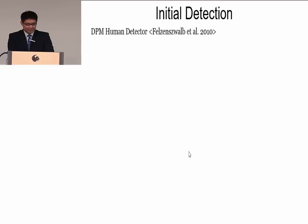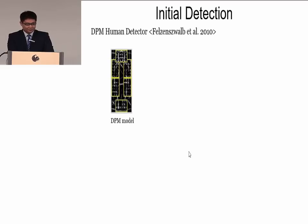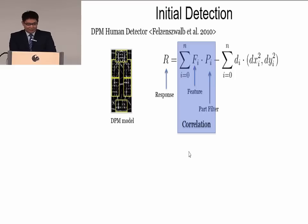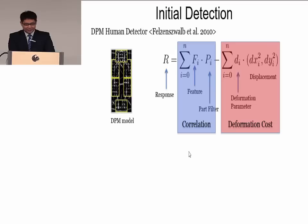The first step is to get initial detections. We employ the DPM human detector by Felzenszwalb. This is the DPM model — it consists of a few parts. If we scan the image using this model, we can get a response by this equation. The first term is correlation between the image and the parts. The second term is the deformation cost of these parts.